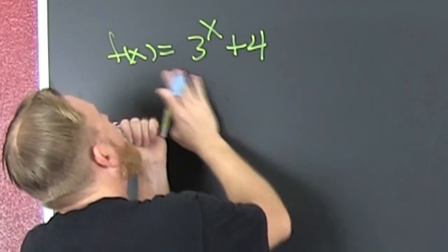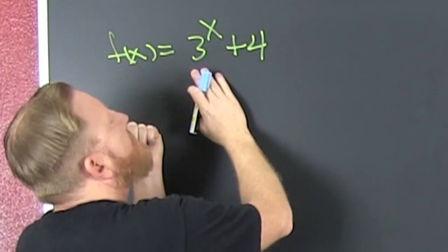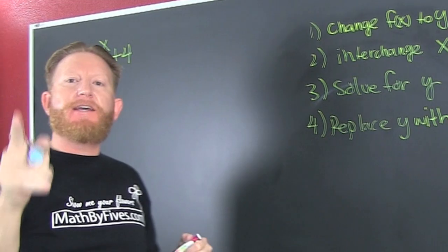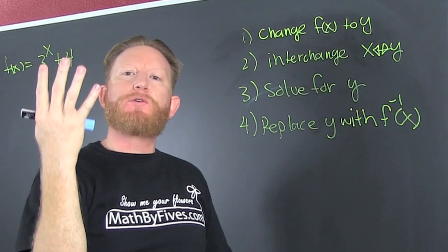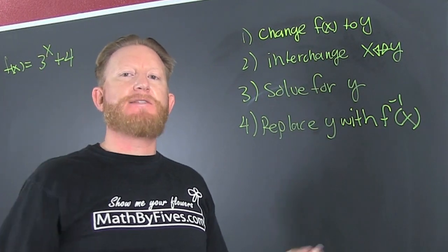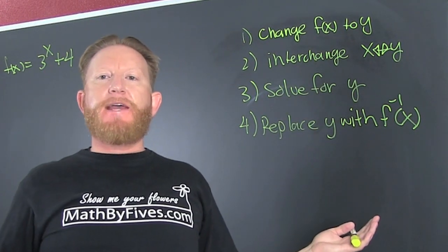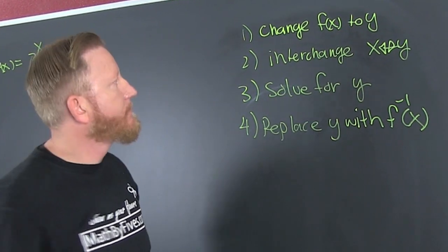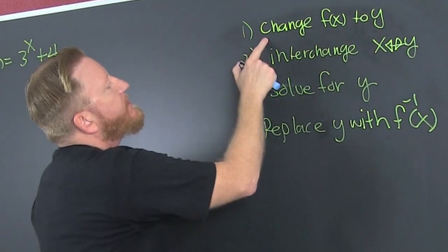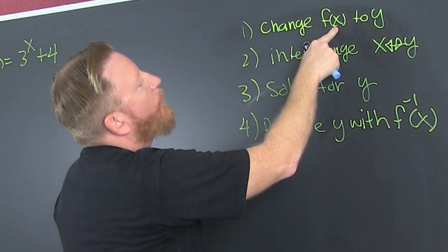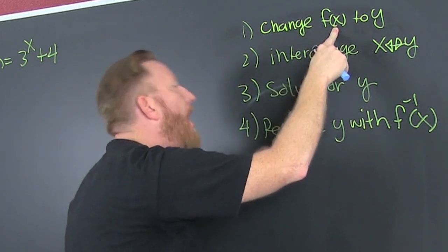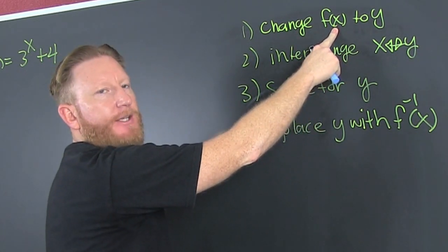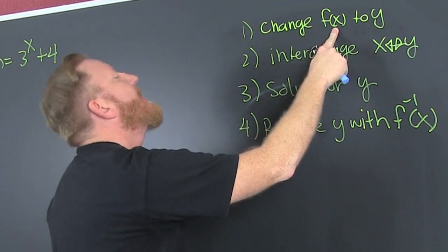We have an exponential and we're trying to find the inverse — the four-step process. It's the same as it's ever been. We're going to change f of x to y, because it's easier on the eye.